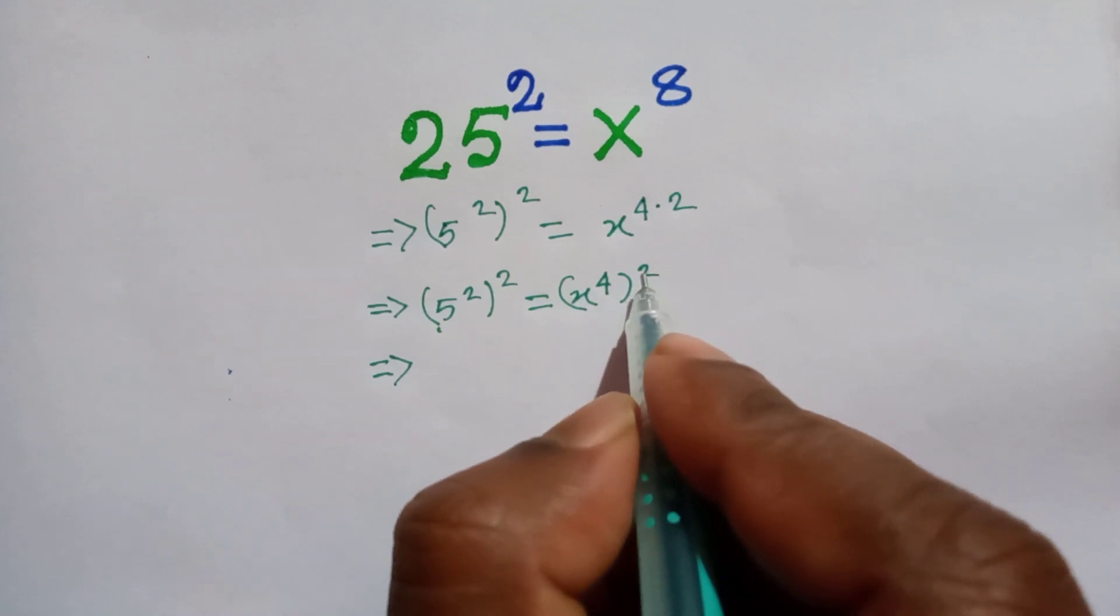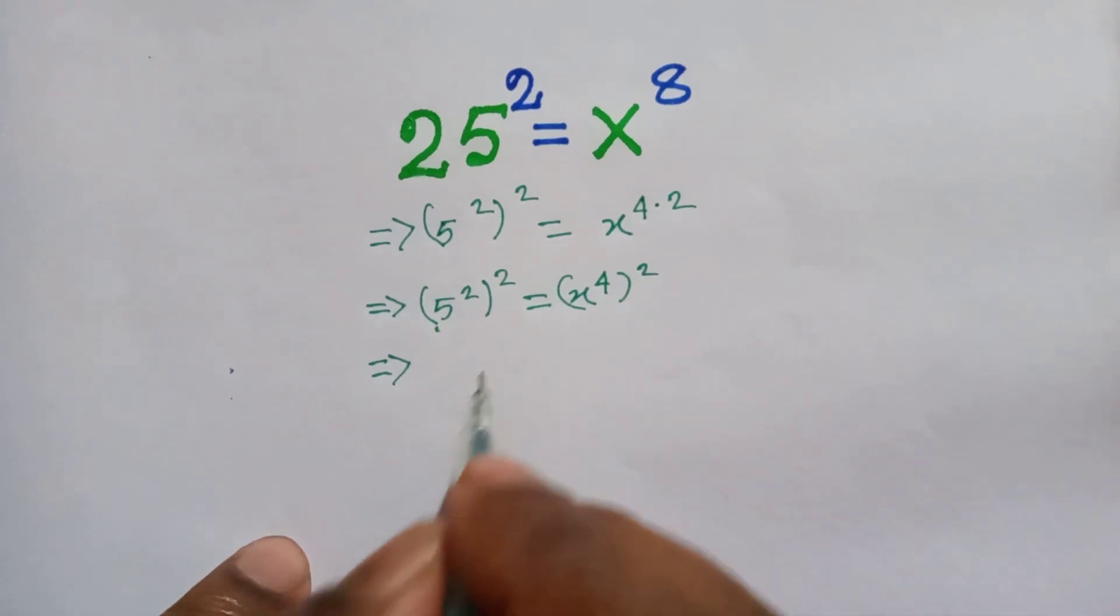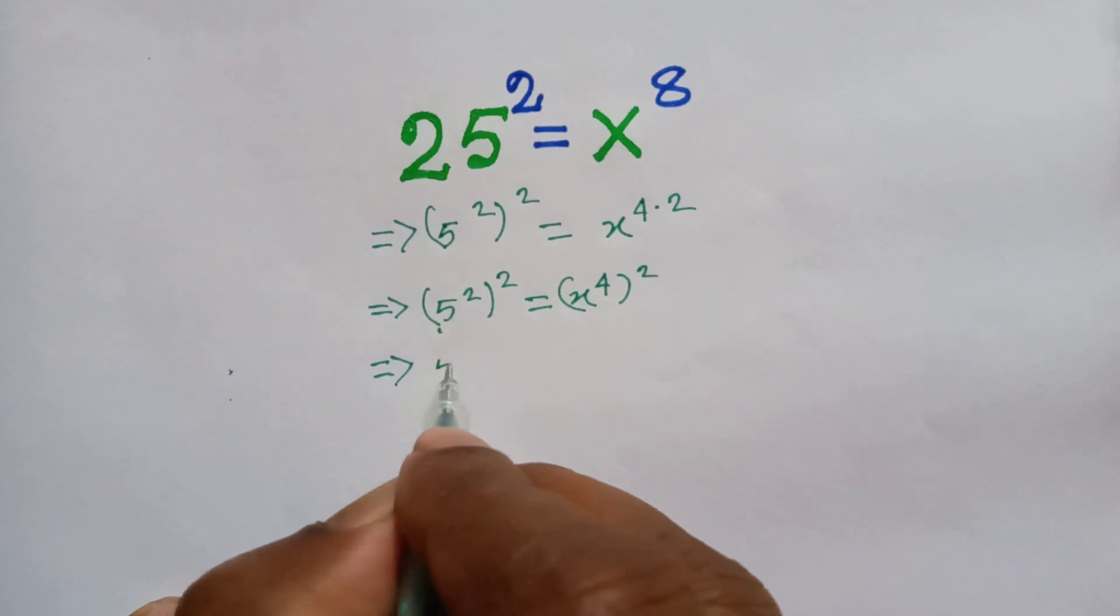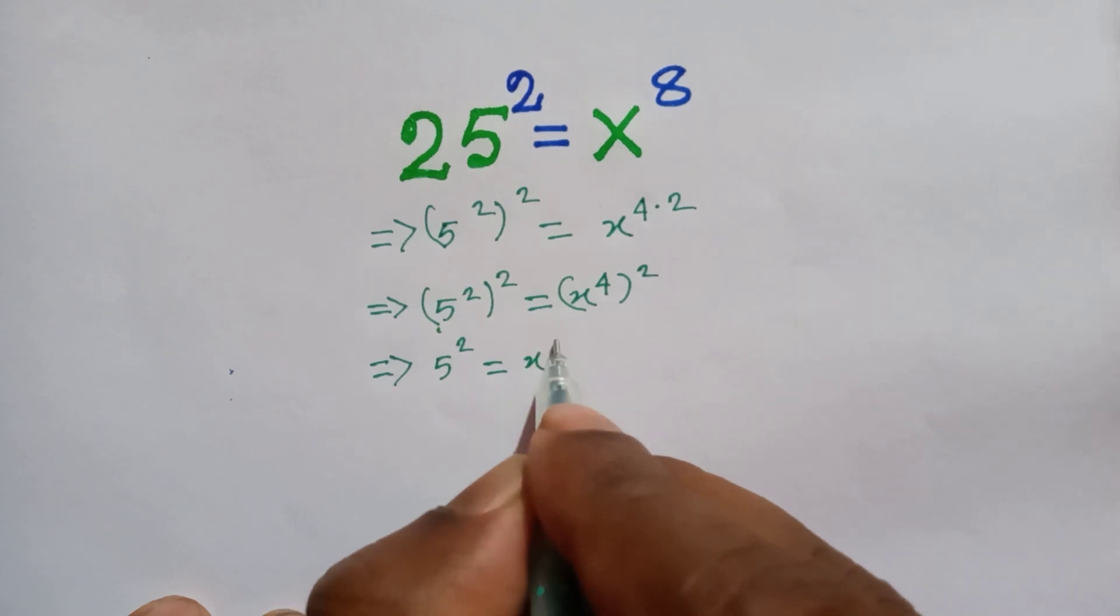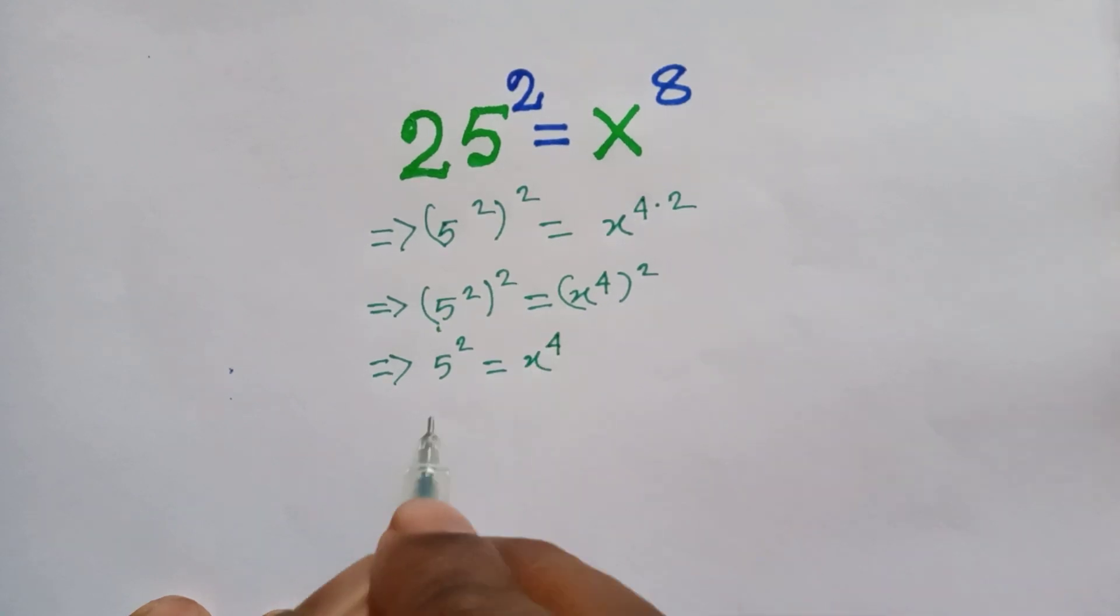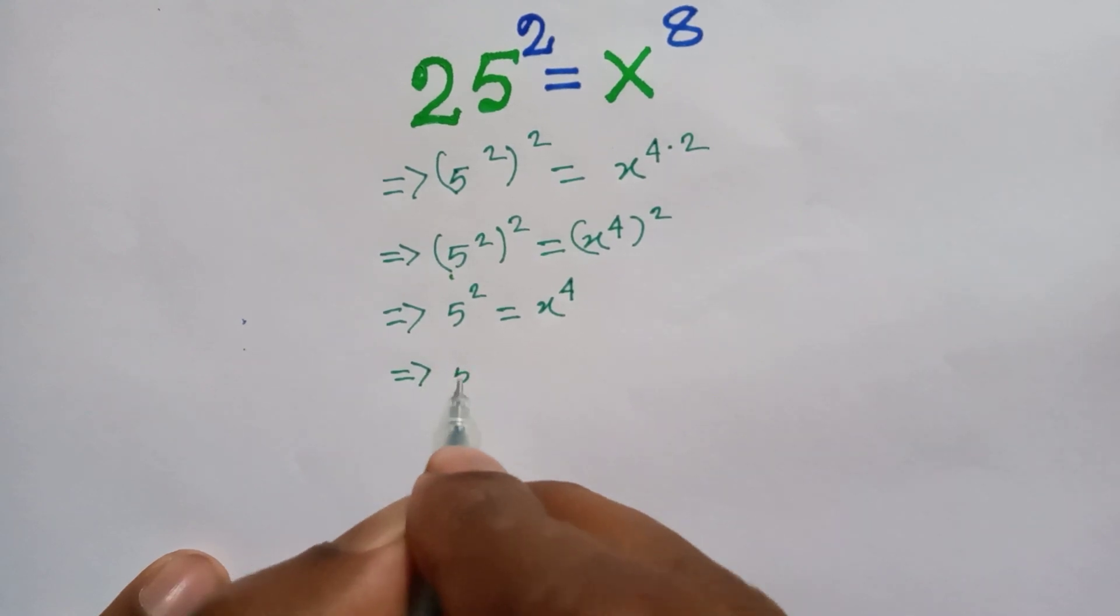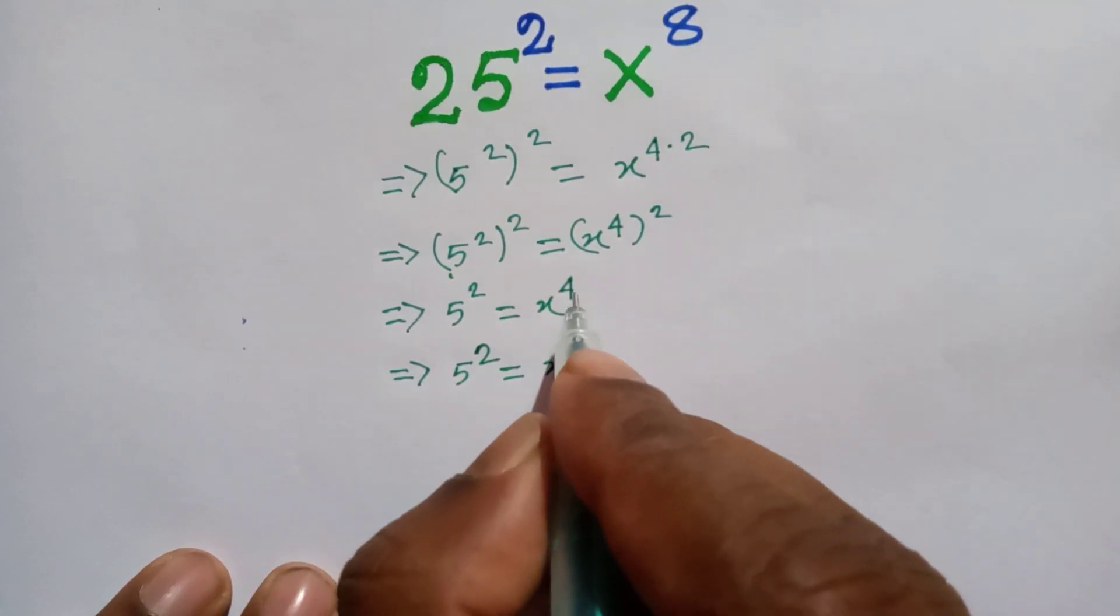So we can write 5 square is equal to x to the power 4.